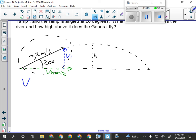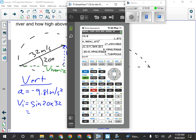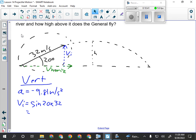So, vertically speaking, I know the acceleration is negative 9.81 meters per second squared. And I can calculate the VI. It's the opposite side, so I'm going to go sine of 20 times 32 meters per second. So that means that generally is moving at 10.94 meters per second vertically upwards. I'm going to make that positive because I made down negative.